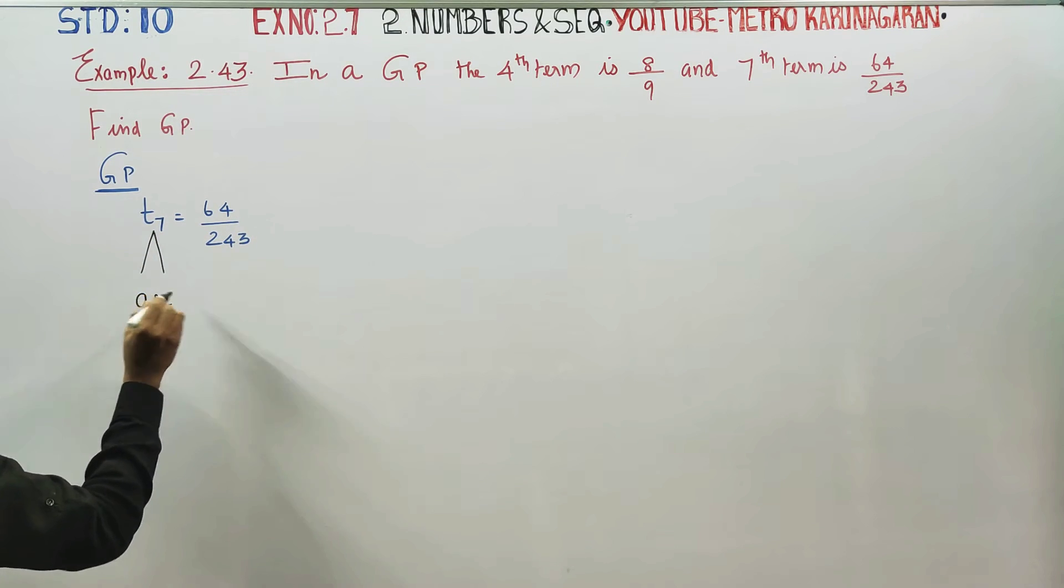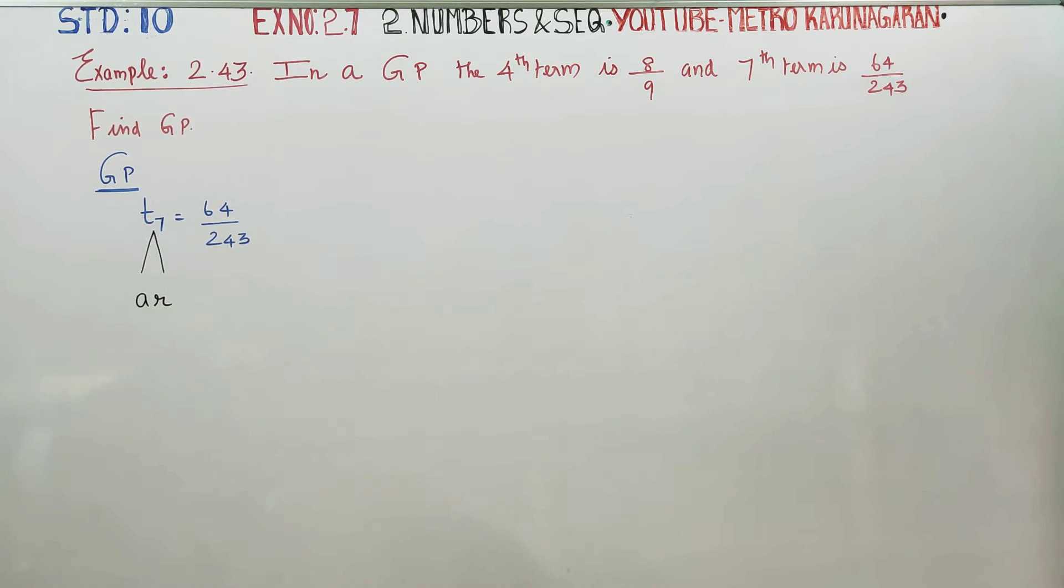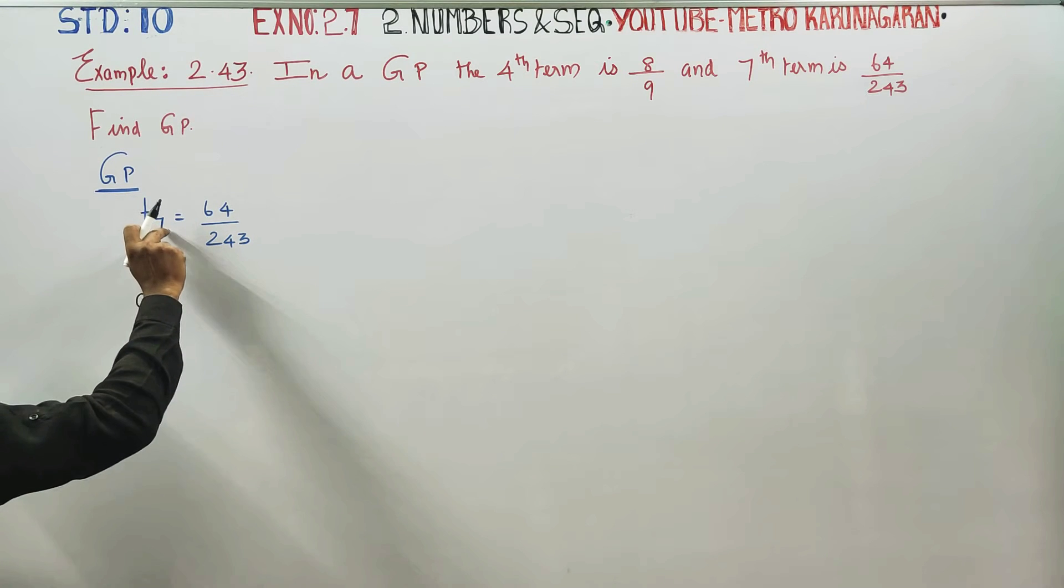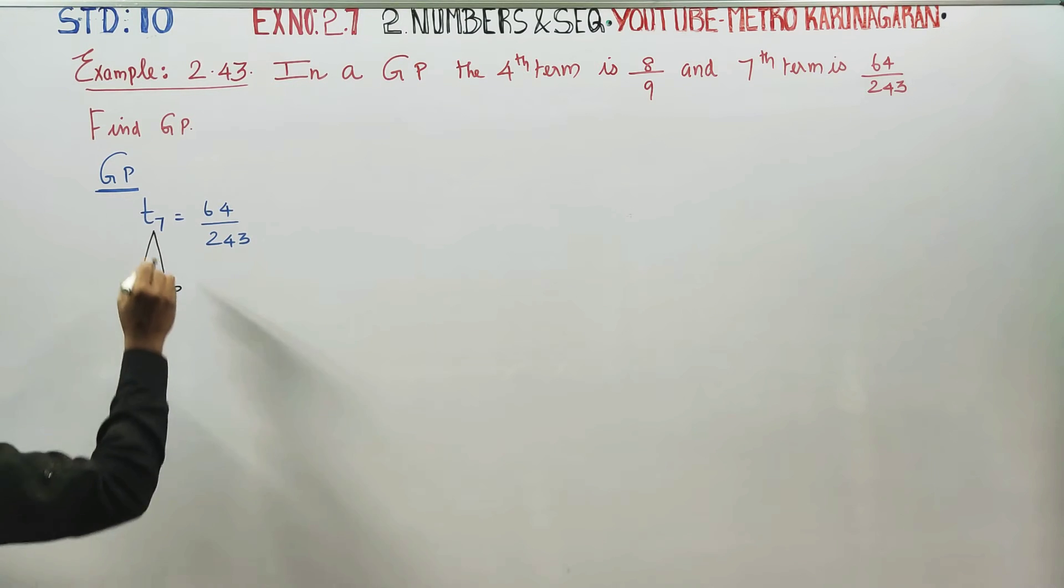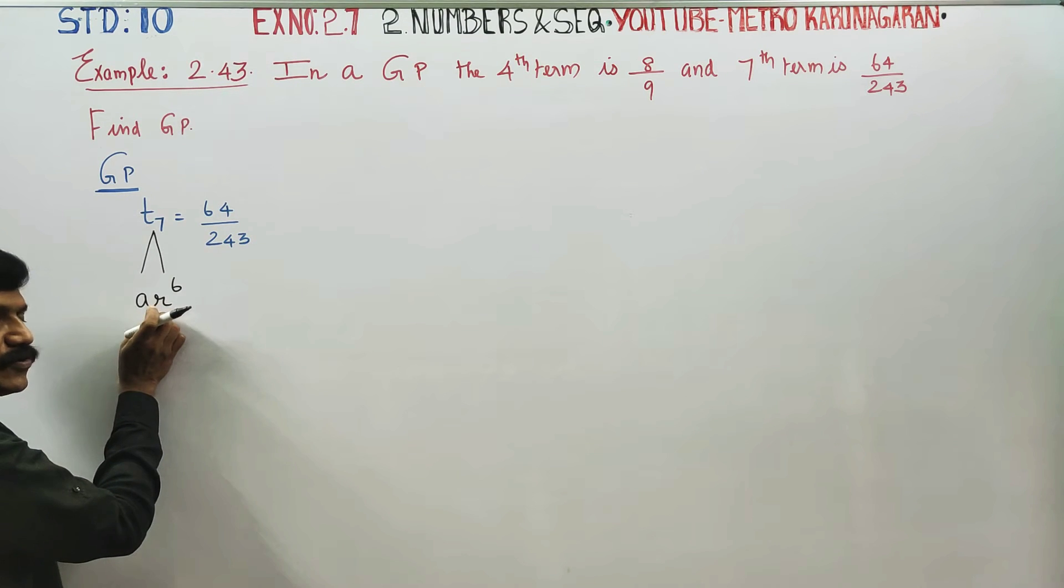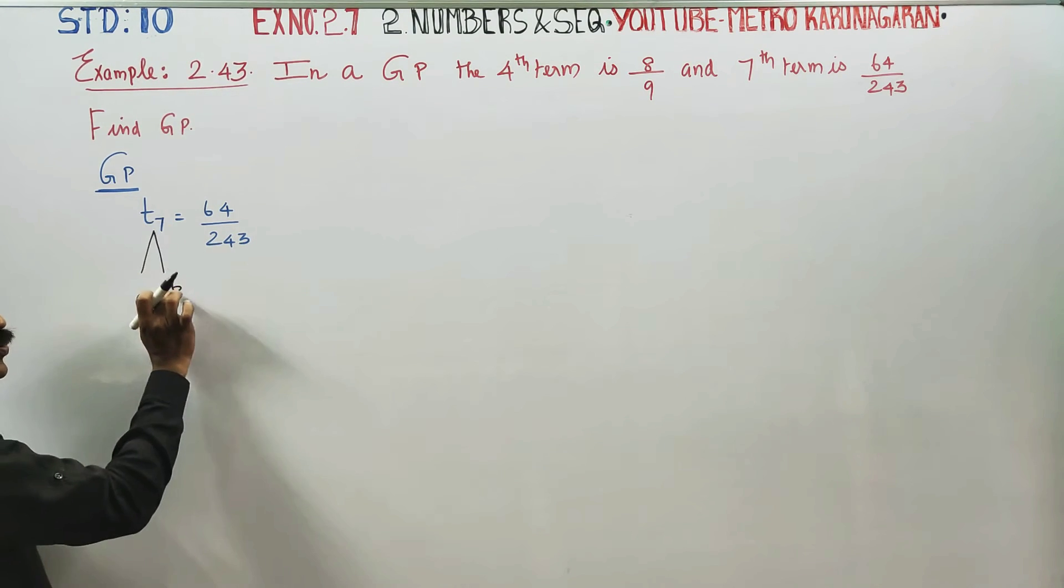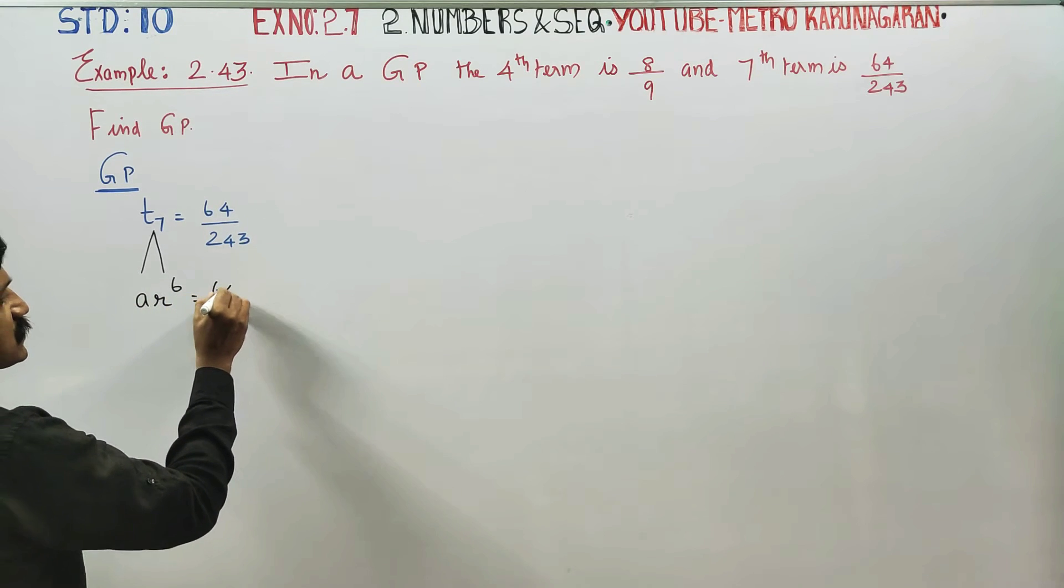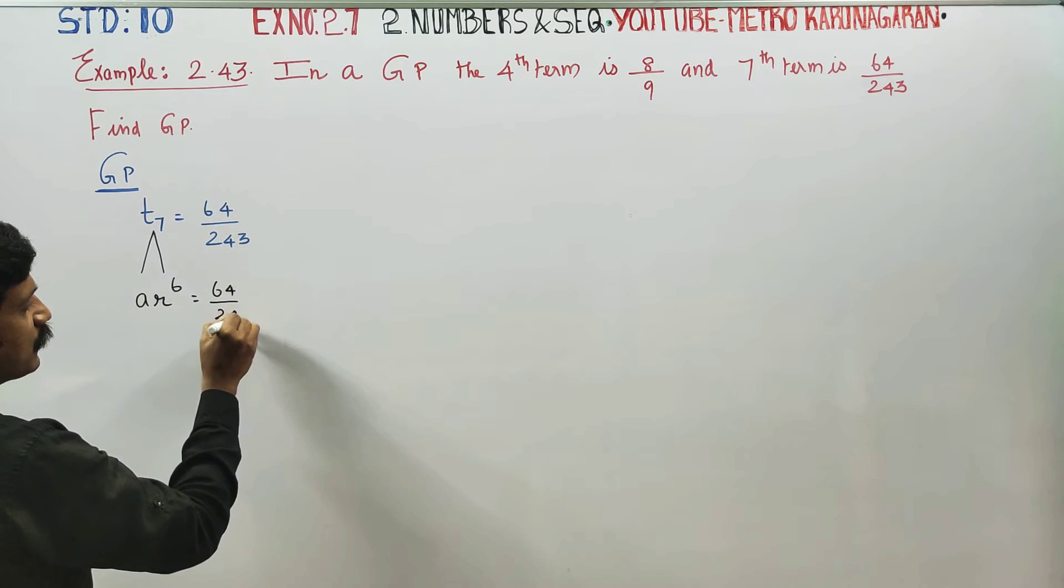A, R power n minus 1, A, R, this is T7 formula. General term formula is A, R, or multiplication will be the first term is equal to 64 by 243.